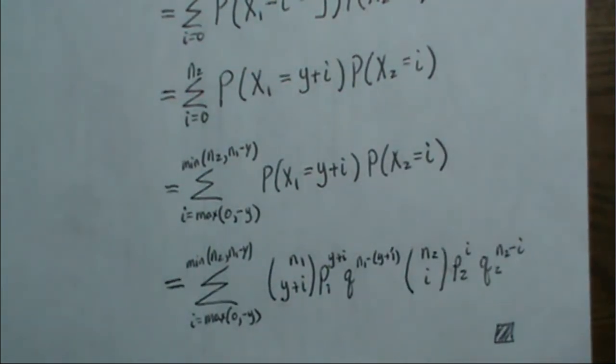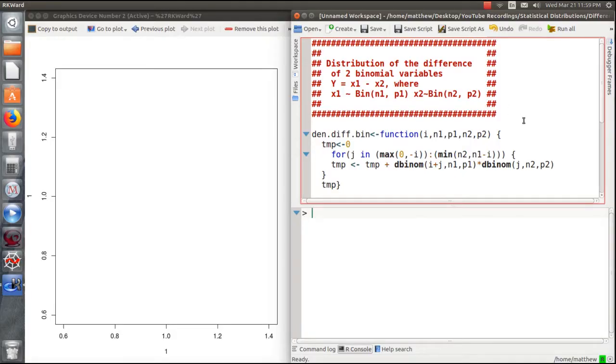Okay, we're in R here. I'm on a Ubuntu Linux based machine. And we're going to look at the distribution of the difference between two binomial parameters. Here we're going to let Y equal X1 minus X2, where the X1 and X2 are binomials. Now this is the function to create that distribution for the density that we just derived.